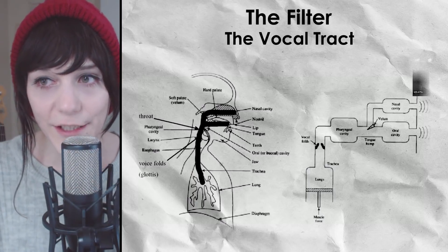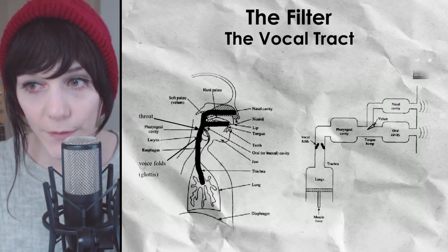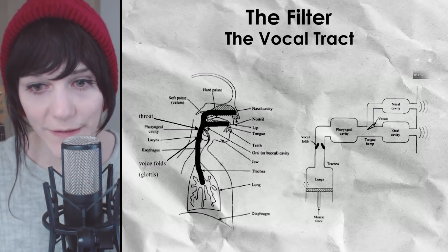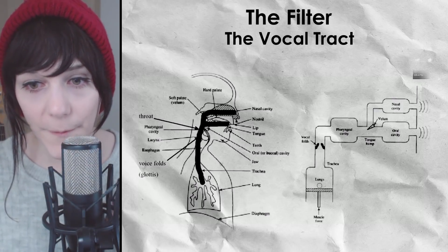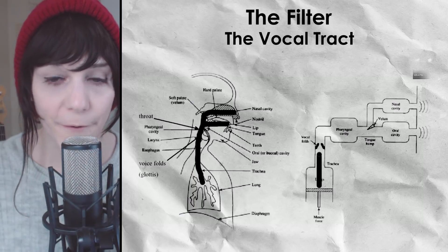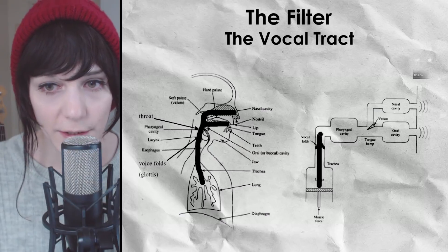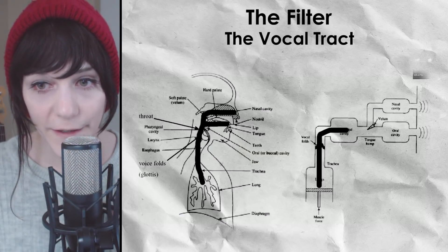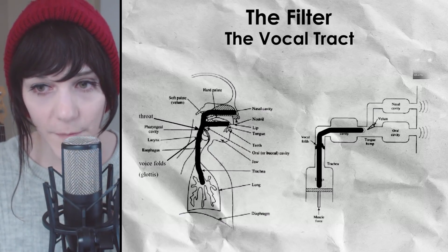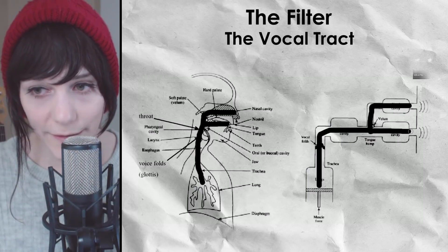We can reduce this mentally into nothing more than a set of tubes. We have the pump of air coming up from the lungs, the vocal folds which essentially open and close allowing air to pass through or not, the pharynx area, the fork off for the nose, and then the oral cavity.